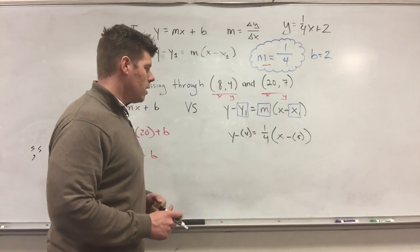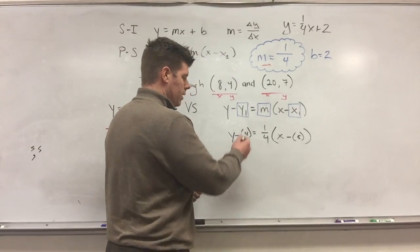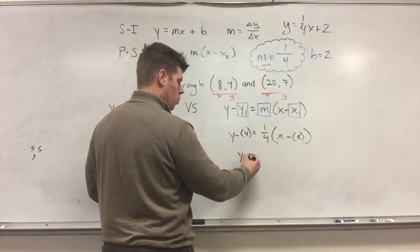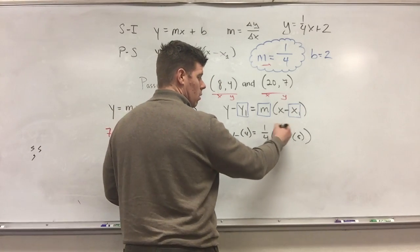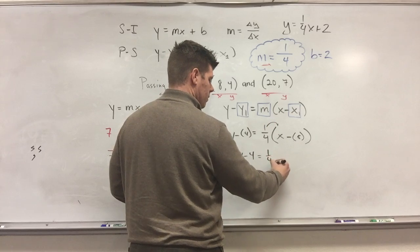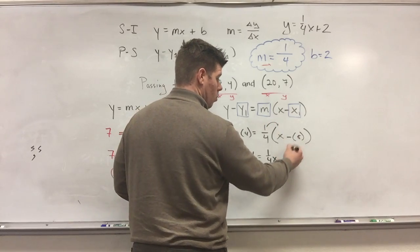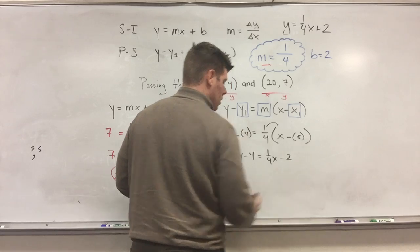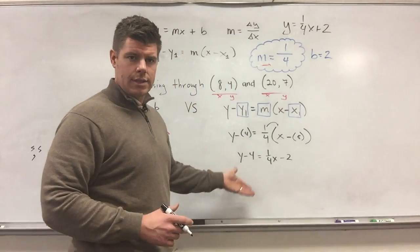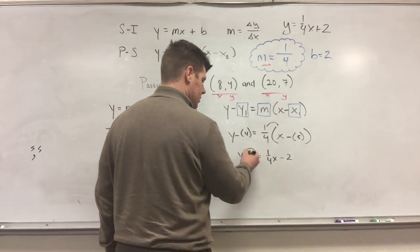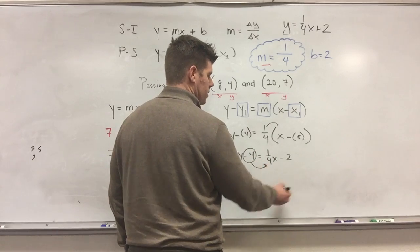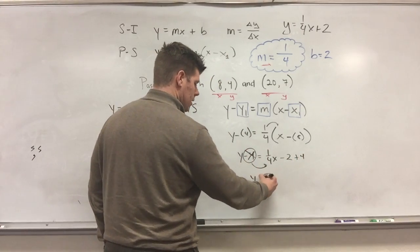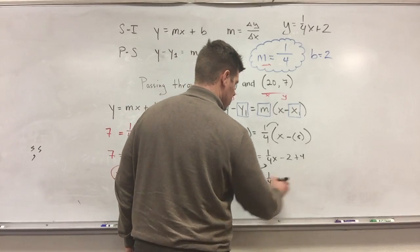So for this particular one, all I now have to do is rearrange this so it says y equals. So I do my distributive property here, so it says y minus 4 equals. We'll distribute, so I get 1 fourth x minus, so 1 fourth times negative 8 is a negative 2. Now the thing is, notice it doesn't say y equals, so we must take this negative 4, throw it on the other side, it becomes a positive 4. So now I've got y equals 1 fourth x plus 2.